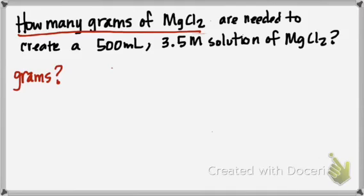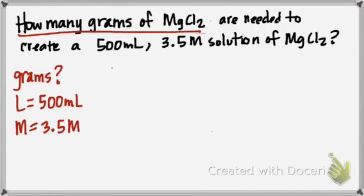And it's asking me for grams, and that's not really part of my formula, but we'll roll with it and see what happens. And then we've got to create a 500 milliliter. So there's my volume. That looks a little more what I'm used to. And then I've got my molarity, which is given to me at 3.5 molar.